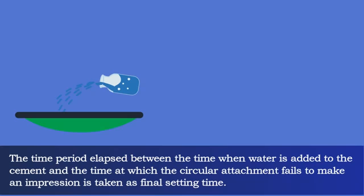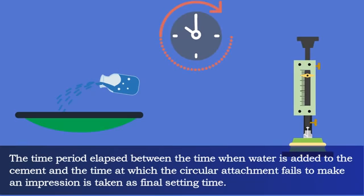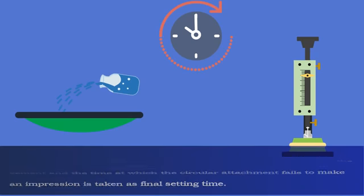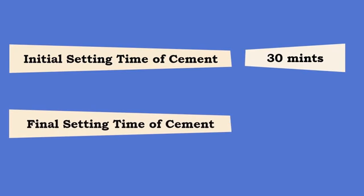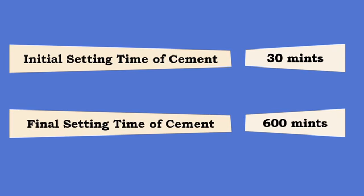The time elapsed between when water is added to the cement and when the circular attachment fails to make an impression is the final setting time. Results of initial and final setting time should be reported to the nearest 5 minutes.